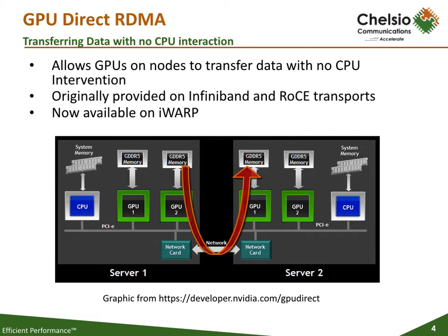GPUDirect RDMA uses a VRBS interface to move data from GPU to GPU with very little intervention by the CPU. Originally designed to be used by InfiniBand and then RoCE, GPUDirect RDMA is now available on Chelsio's iWARP.